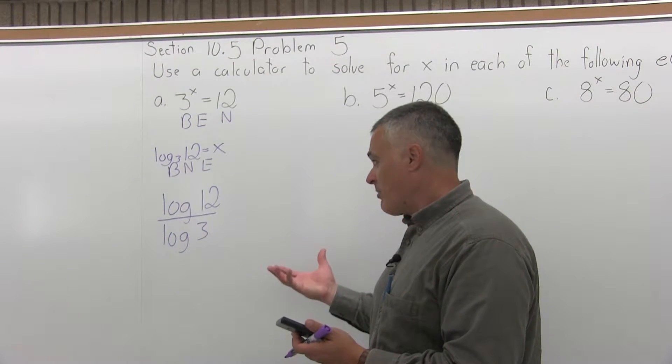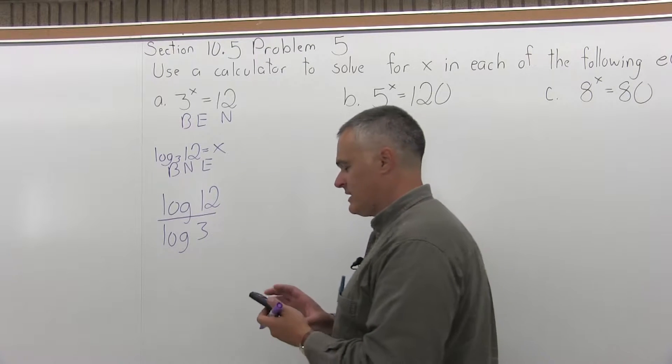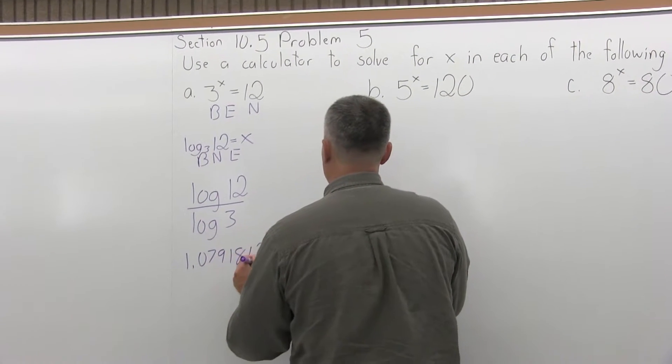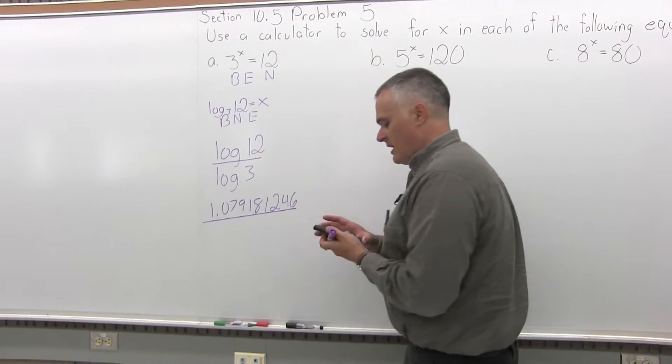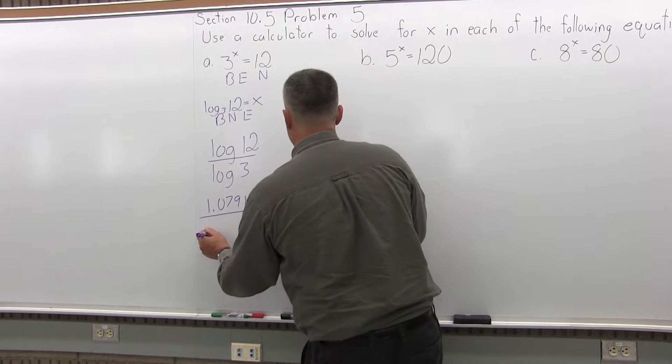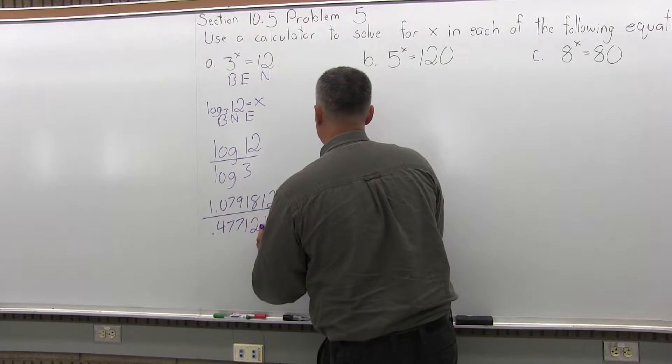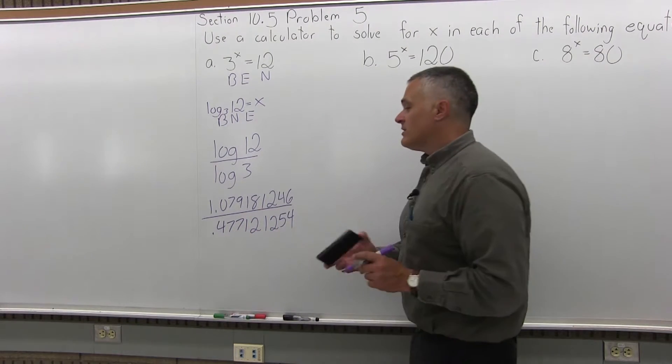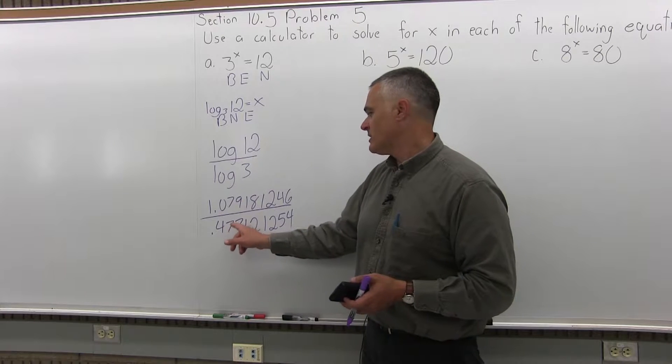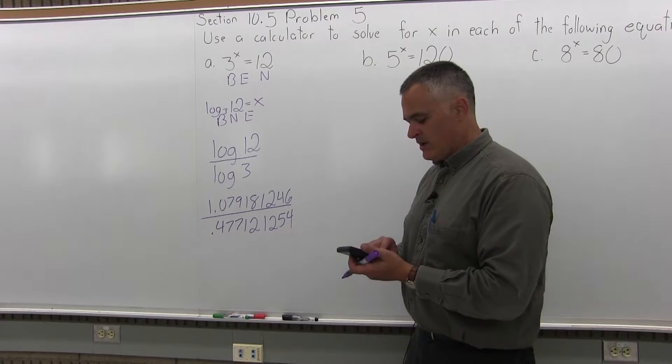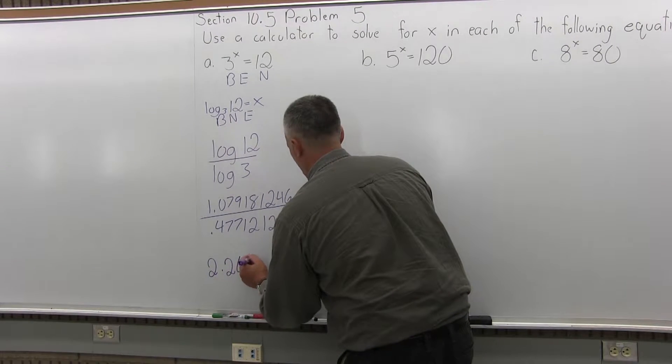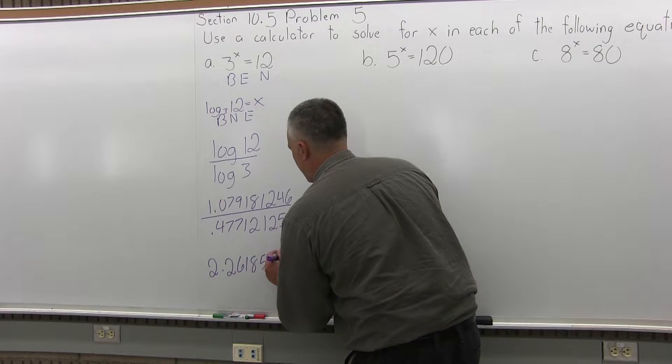So the top or numerator, common log of 12. The calculator tells me very easily that common log of 12 is 1.079181246. And then in the denominator, we're going to have common log of 3, which the calculator also tells me very easily is .477121254. And now when you divide those two values, 1.079181246 divided by .477121254, calculator tells you that it is 2.261859507.